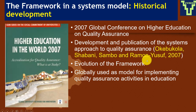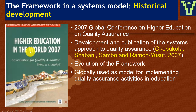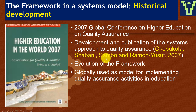Around 2005, Okubukola, Shabani, Sambo, and Ramon Yusuf worked towards developing this framework. By 2007, at the Global Conference on Higher Education on Quality Assurance organized by the Global University Network for Innovation, the framework was reported in the book 'Higher Education in the World 2007: Accreditation for Quality Assurance — What Is at Stake?' Since 2007 when we published this framework it has evolved — we added more elements — and I'm very happy to say it is now globally used as a model for implementing quality assurance activities in education. You can find it by googling 'Higher Education in the World' — it's published by Palgrave Macmillan.